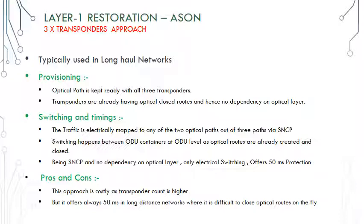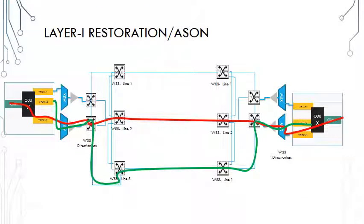Layer 1 restoration is widely deployed in long-haul networks. Here the optical path is always kept ready with all three transponders already having optical closed routes, with no dependency on optical layer switching — switching happens at the electrical level. Any ODU or VC switches within the wavelengths already present. A client connects to an ODU cross-connect, and three transponders build paths on physically redundant routes with no common point of failure. When a failure occurs on any path, the switch internally routes the VCG or ODU coming from the client to another available optical path. Since there is no change on the optical path itself, switching always happens within 50 milliseconds as long as resources and ODU capacity are available.